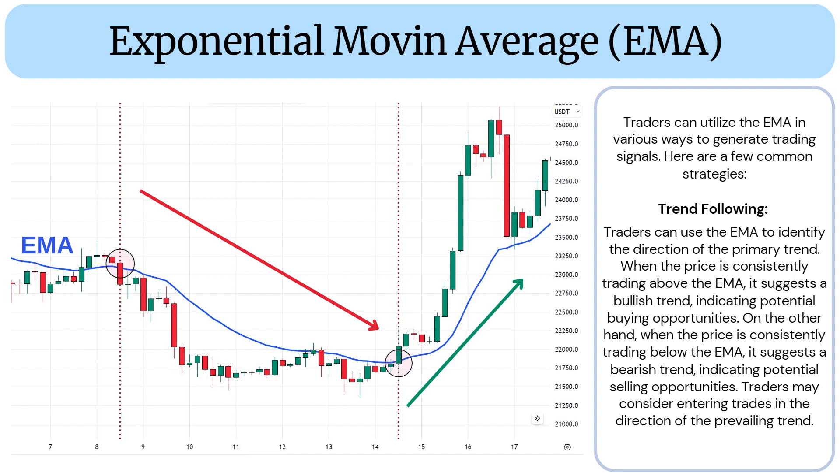On the other hand, when the price is consistently trading below the EMA, it suggests a bearish trend, indicating potential selling opportunities. Traders may consider entering trades in the direction of the prevailing trend.